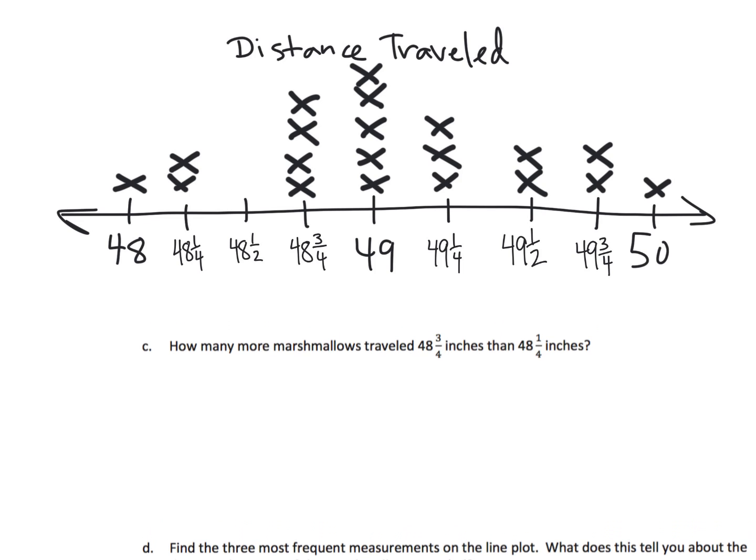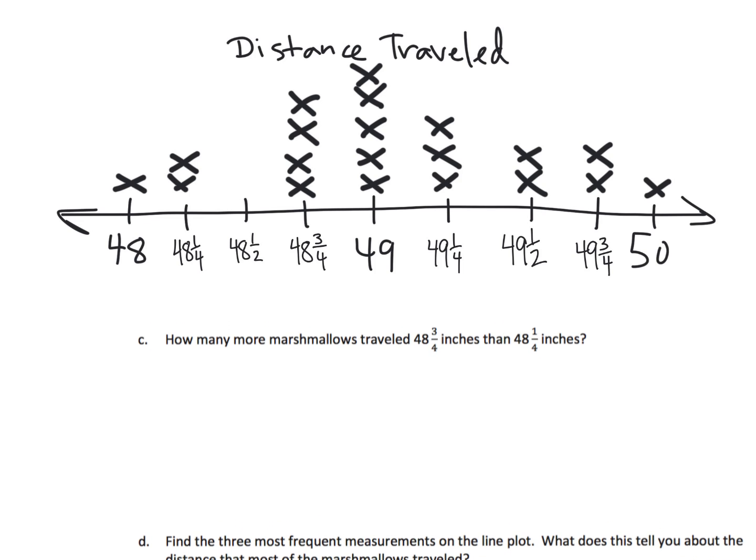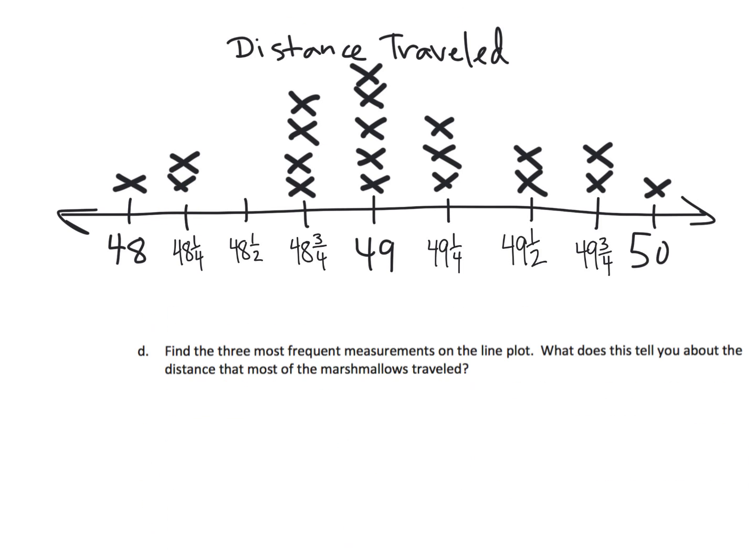But the next question is, how many more marshmallows traveled 48 and three quarters inches than 48 and one quarter inches? Well, we can see there's two down here, four down here. So the answer is two. There are two more that traveled 48 and three quarters than 48 and one quarter.